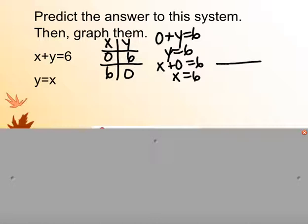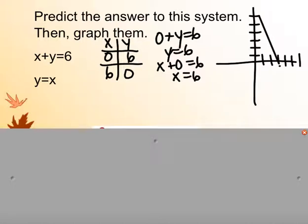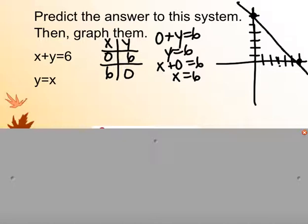Going to my graph: for (0, 6), x doesn't move left or right but goes up 6. For (6, 0), we go 6 to the right but don't go up. That gives me my first line.